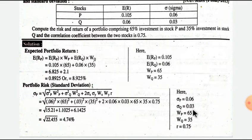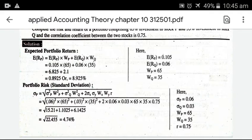Sigma P is 0.06, sigma Q is 0.06, weight of P is 65, weight of Q is 35, and r the correlation coefficient between the two stocks is 0.75.